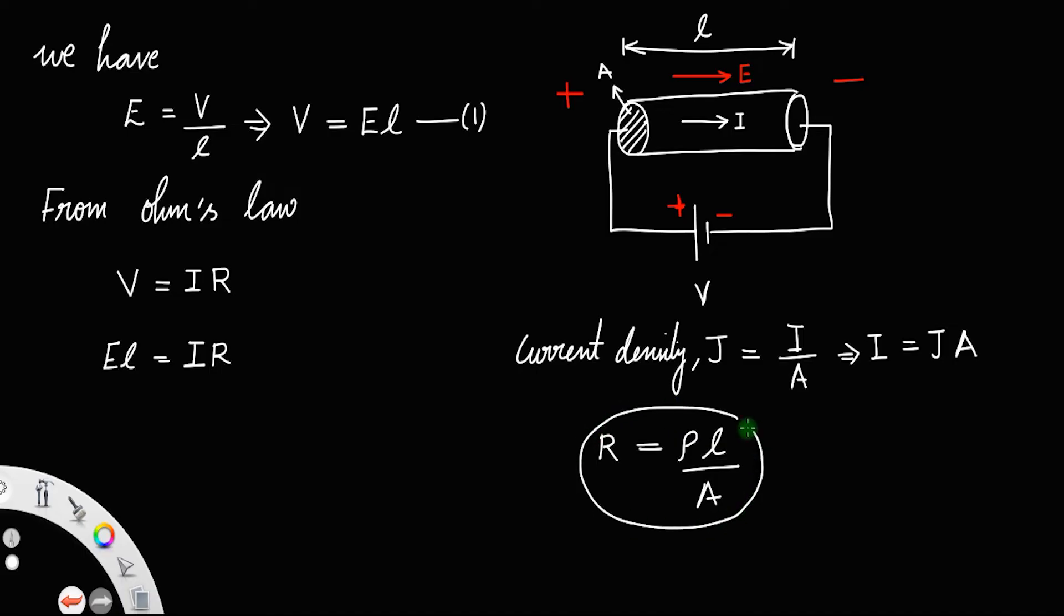Let us substitute these two in here, so that EL equals JA times ρL divided by A. You can cancel L and L, and A and A, so that electric field E equals ρ times J.